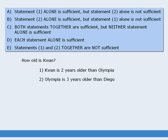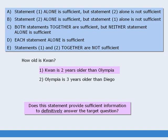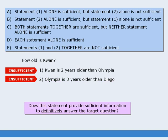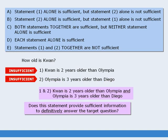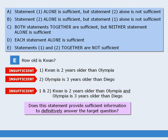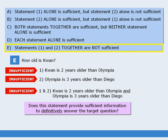One last question. The target question is the same — find Quan's age. Statement 1 does not provide enough information to determine Quan's age, so it is insufficient. Statement 2 is also insufficient. Since neither statement alone is sufficient, we examine both statements combined. Combined, we know Quan is 2 years older than Olympia, and Olympia is 3 years older than Diego. Even combined, the two statements are not sufficient to determine Quan's age. So the correct answer is E — both statements together are not sufficient.